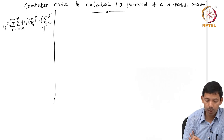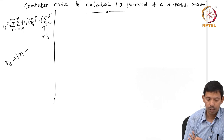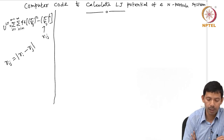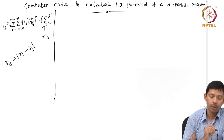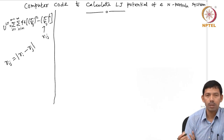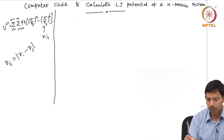The variable here is basically r_ij. r_ij is nothing but r_i minus r_j — the inter-particle distance between particle i and j. That is the only variable you have to calculate inside the loops. Epsilon and sigma are constant values which you can read directly, so we will start by reading epsilon and sigma.